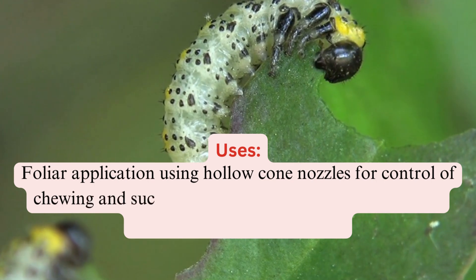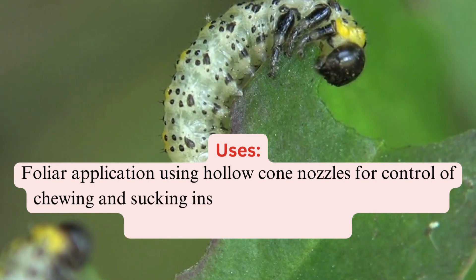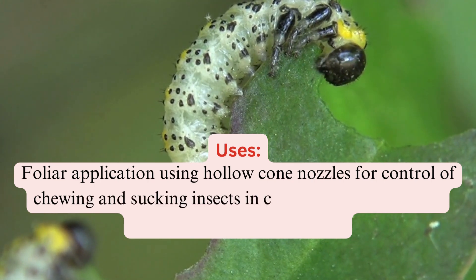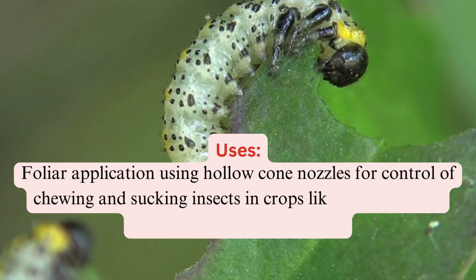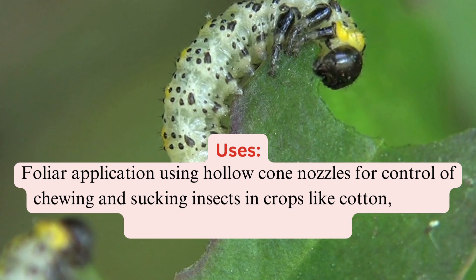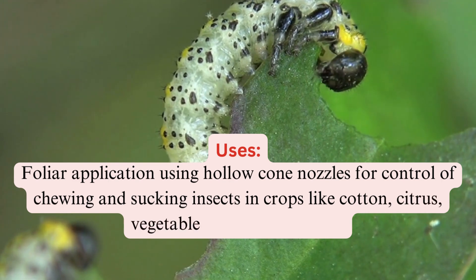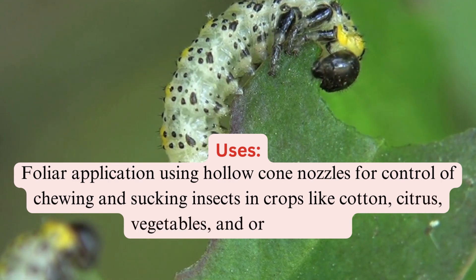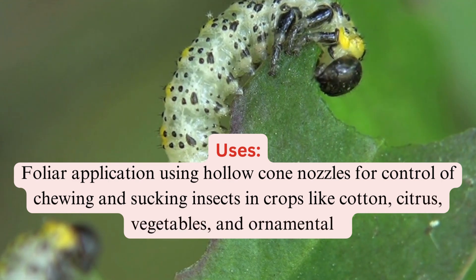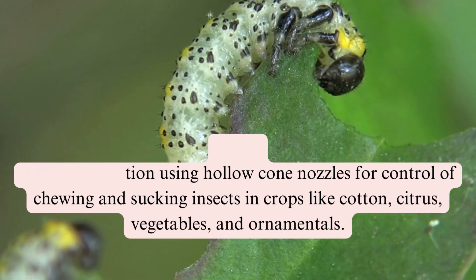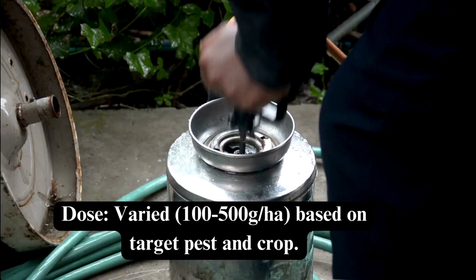Target pests and crops include armyworm, whiteflies, thrips, jassids, pink bollworm, and American bollworm in cotton, citrus, vegetables, and ornamentals.